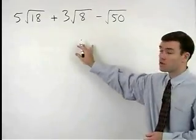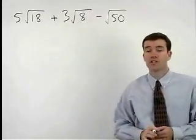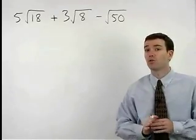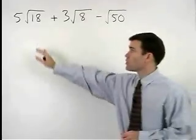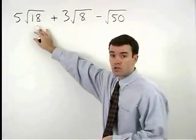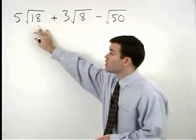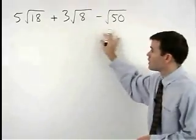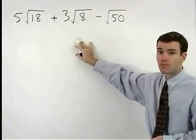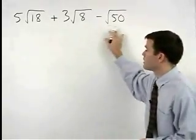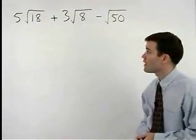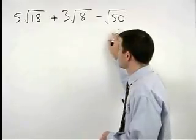In order to add these radical terms together, we must have what are called like radicands. In other words, the number inside the radical, which is called the radicand, must be the same for the different terms. Clearly in this problem, the radicands are very different. But notice that we can break down each of our square roots.